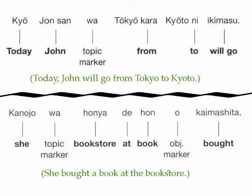Kyo, John-san wa Tokyo kara Kyoto ni ikimasu — today, John, from, to, will go. In other words, today John will go from Tokyo to Kyoto.